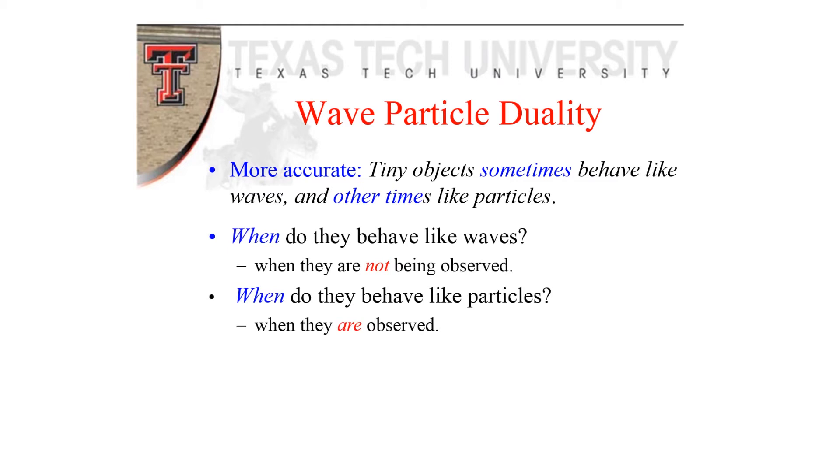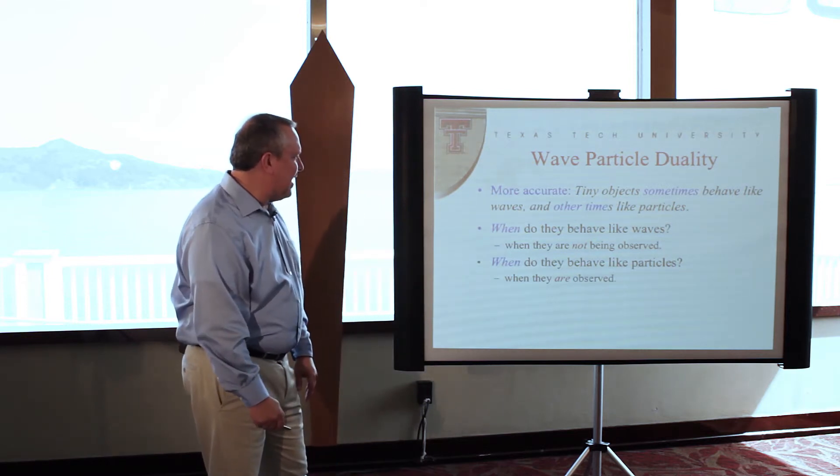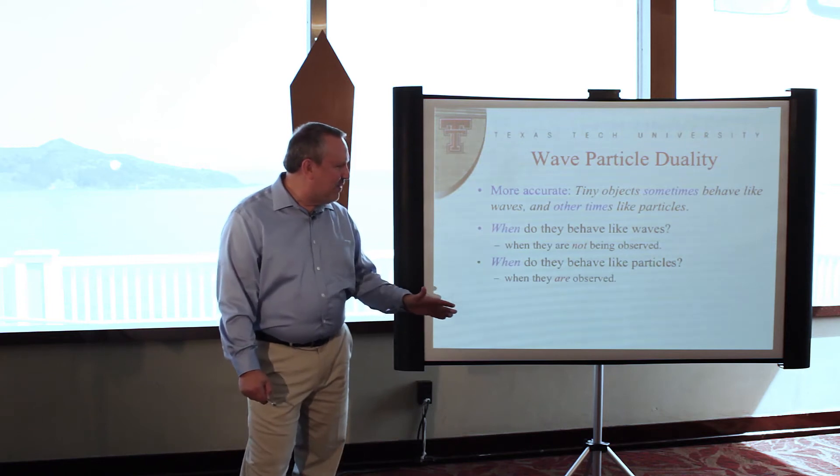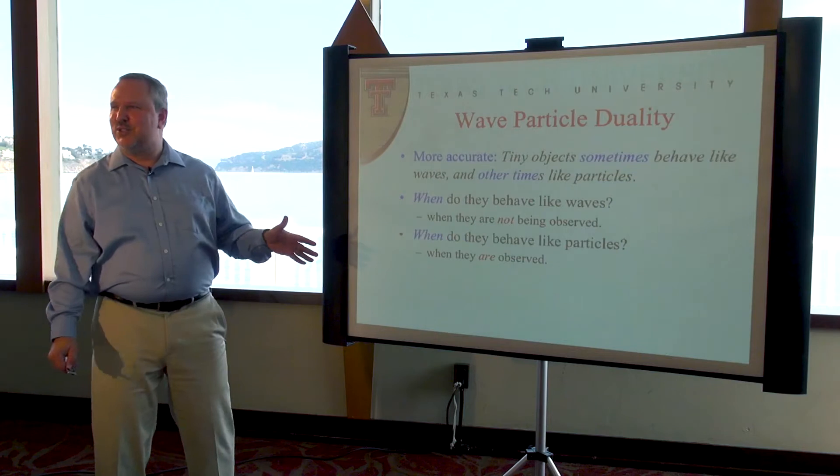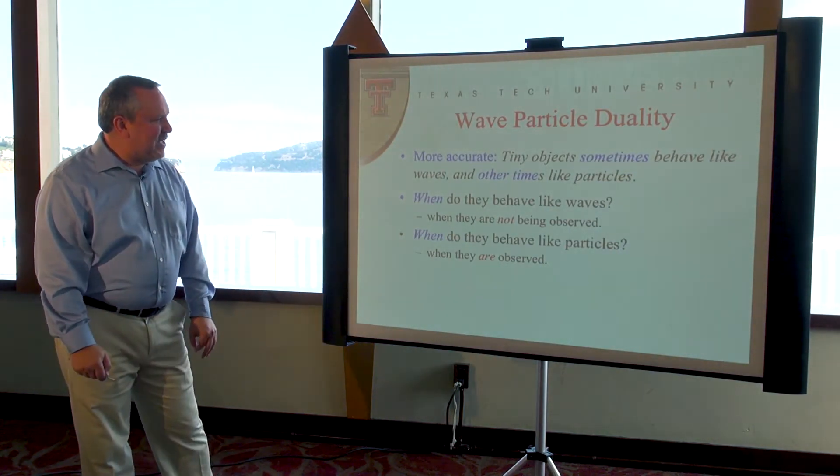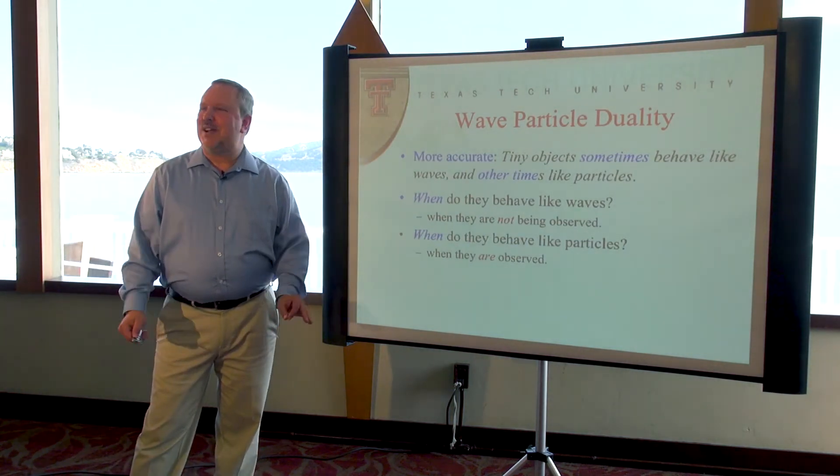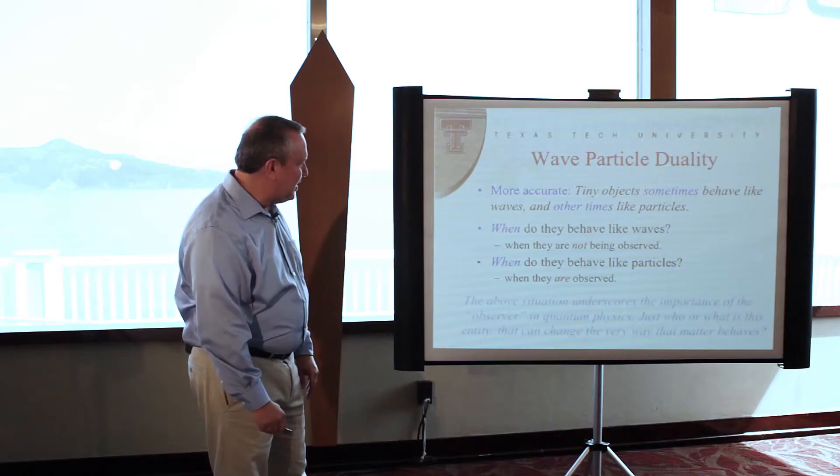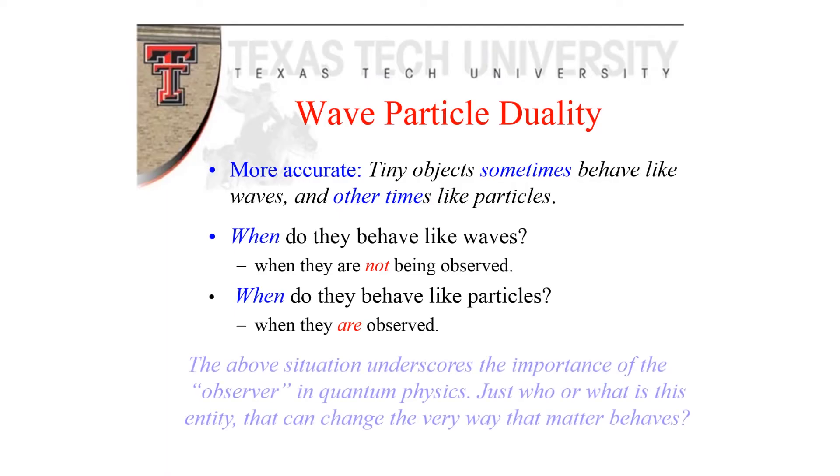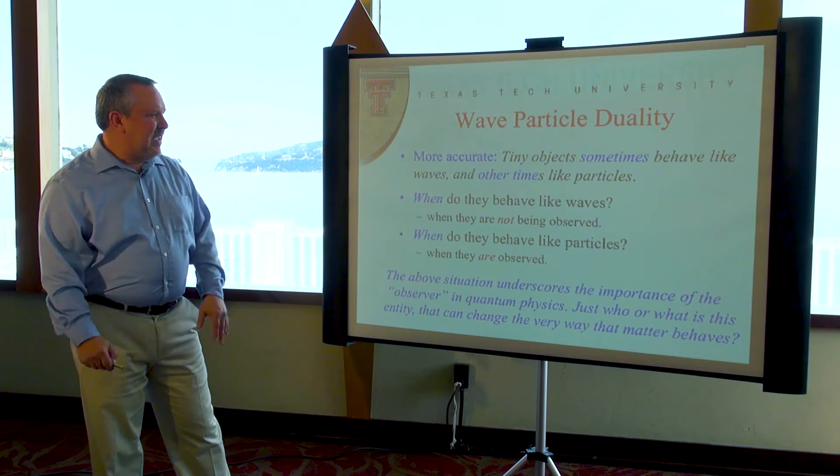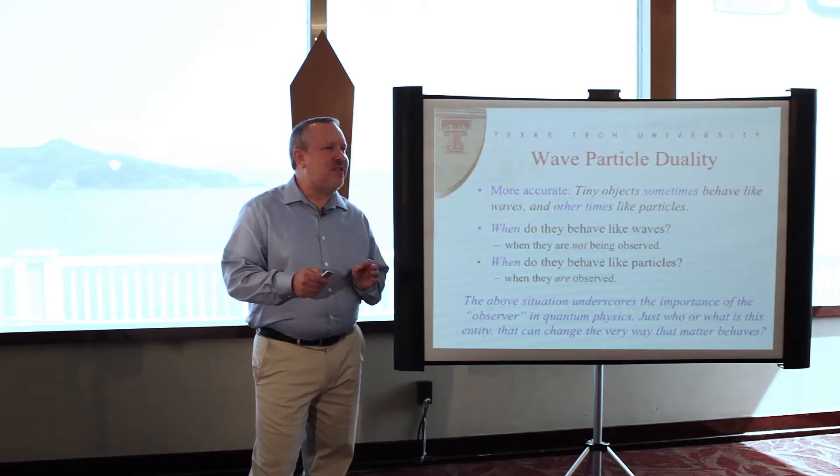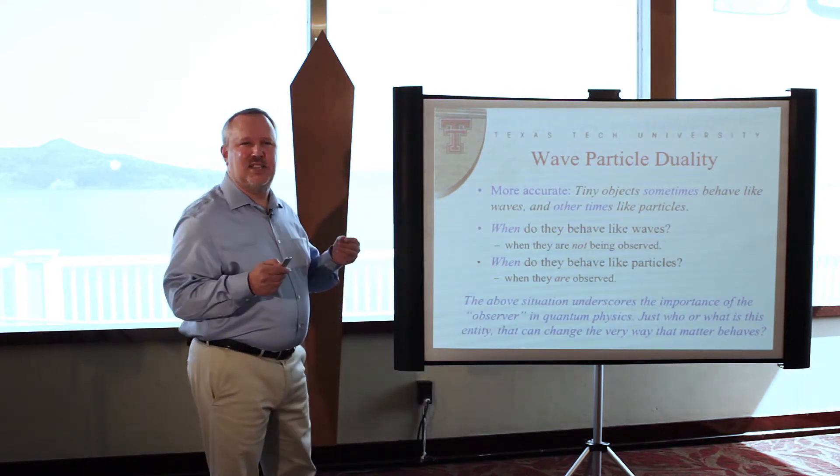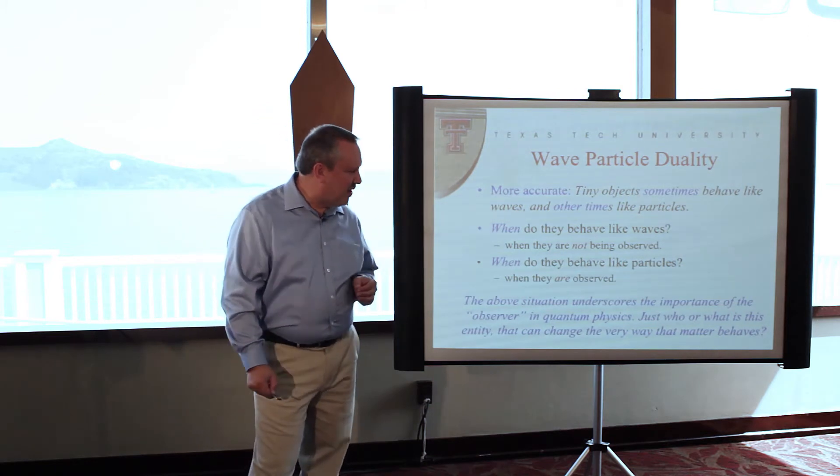So there is this idea that the tiny objects sometimes behave like waves, other times like particles. When do they behave like waves, when do they behave like particles? And the short answer is they behave like waves when they are not being observed, and they behave like particles when they are being observed. So already this is very strange. How do they know? It's almost as if they're doing it on purpose or something. It's a very strange state of affairs. But the other thing that's relevant for this presentation is that this situation underscores the importance of the observer in quantum physics. These are very different behaviors, you can't go smoothly from one to the other. And so it's an either-or situation that implies that the role of the observer isn't something that can be made arbitrarily small, which is the assumption of classical physics.